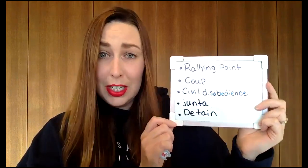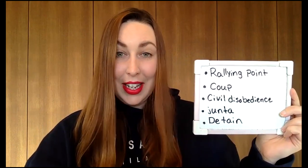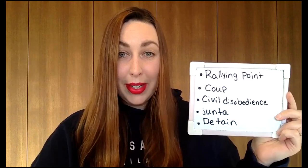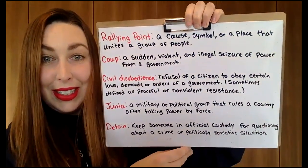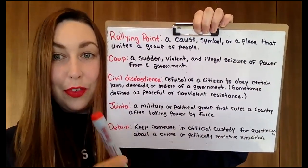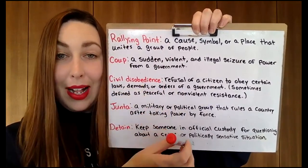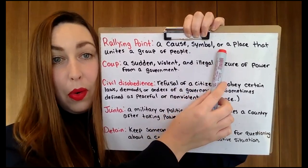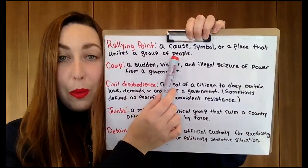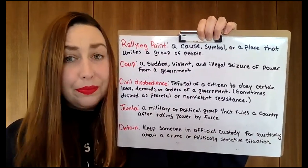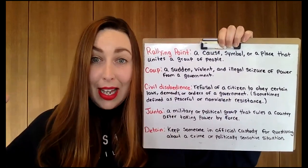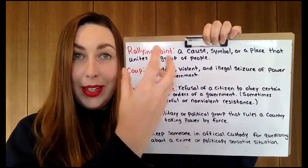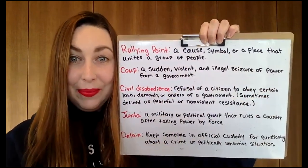Let's get into the definitions of those words. I have them all written out for you, so you can follow along. First is 'rallying point.' So what is a rallying point? It could be a cause, a symbol, or a place that unites a group of people. Something or someplace that brings a group of people together and unites them for one cause or one thing — that is a rallying point.